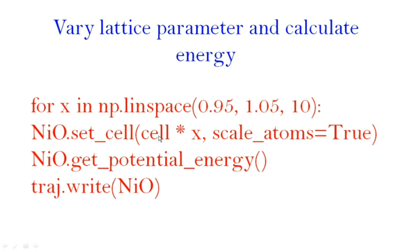This is the important part: I will change the lattice parameter by reducing it by 5% and expanding it by 5%, creating 10 images in between. If my lattice parameter is 4, the first image is reduced by 5% and the 10th is expanded by 5%, with 8 equivalent images in between. For each image I will perform an SCF calculation and write the trajectory using traj.write(nio).